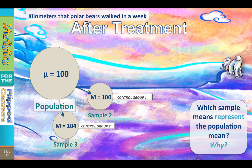The sample mean for control group two is 104. Does that sample mean represent the population mean? Well, it's not exactly the same as the population mean, but it's still pretty close. I think that the sample mean for control group two is really the same as the population mean of 100, and the four-point difference is best explained by random chance or measurement error.